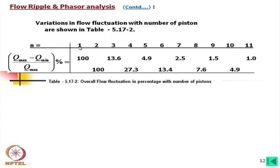For one piston, q_min is 0 and flow fluctuation is 100%. For two pistons, it is also 100%. For three pistons using the odd-number formula, fluctuation drops dramatically to only 13.6%. For four pistons, it increases again.